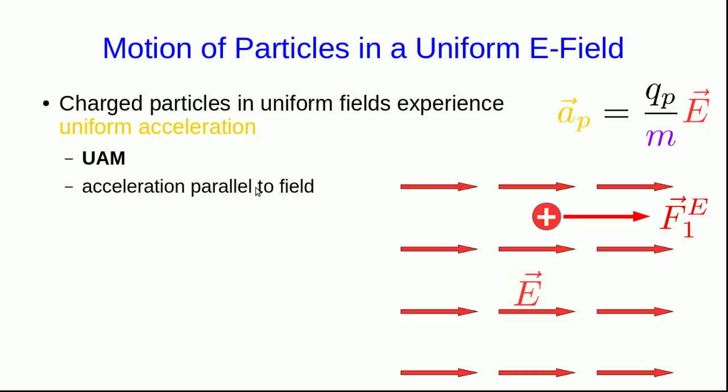The acceleration is going to be parallel to the field. In the case of a positive charge, it'll point in the same direction as the field, and in the case of a negative charge, the acceleration will be in the opposite direction to the field. And the magnitude of the acceleration will be determined both by the E field strength and by the charge-to-mass ratio.